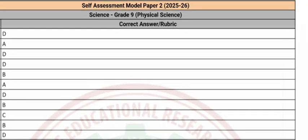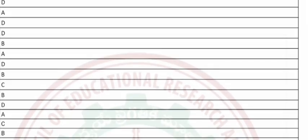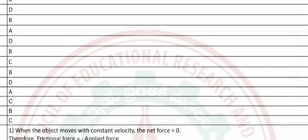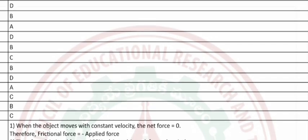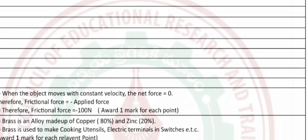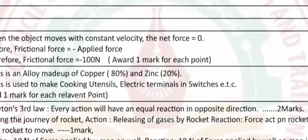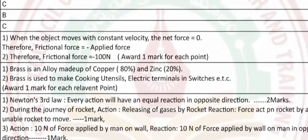Now the answers. Section A answers: the sequence is given. For question 16, since the object moves with constant velocity, net force is zero; therefore frictional force equals minus the applied force, so frictional force is minus 100 newtons.